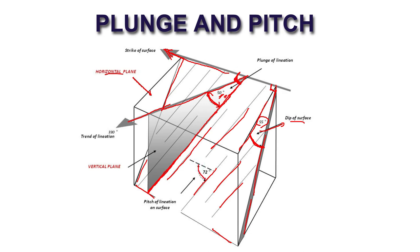but for this lineation, the angle is not 90 degrees — it's 72 degrees. This 72-degree angle is measured on the particular plane on which the lineation is present. The angle measured with the strike line on this surface, which has a dip of 55 degrees, is the pitch of this line.